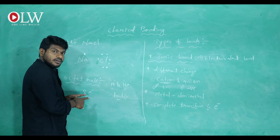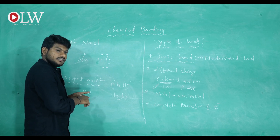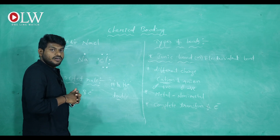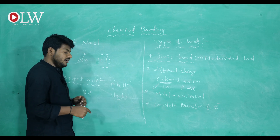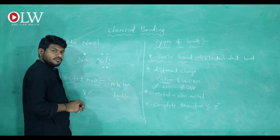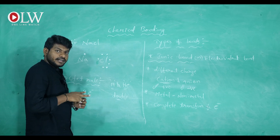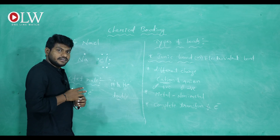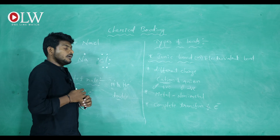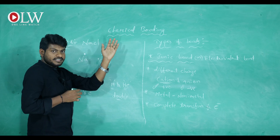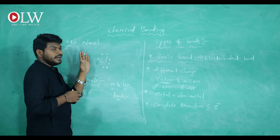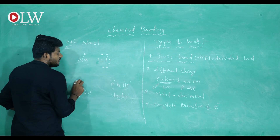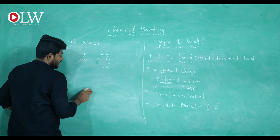According to the octet rule, every element in nature must contain eight electrons in their outermost shell. Every element has to follow this rule. To follow this rule, transfer of electrons takes place. While transferring electrons, bonds are formed — we call them chemical bonds. In this case, we are discussing the ionic bond. Every element must follow the octet rule.